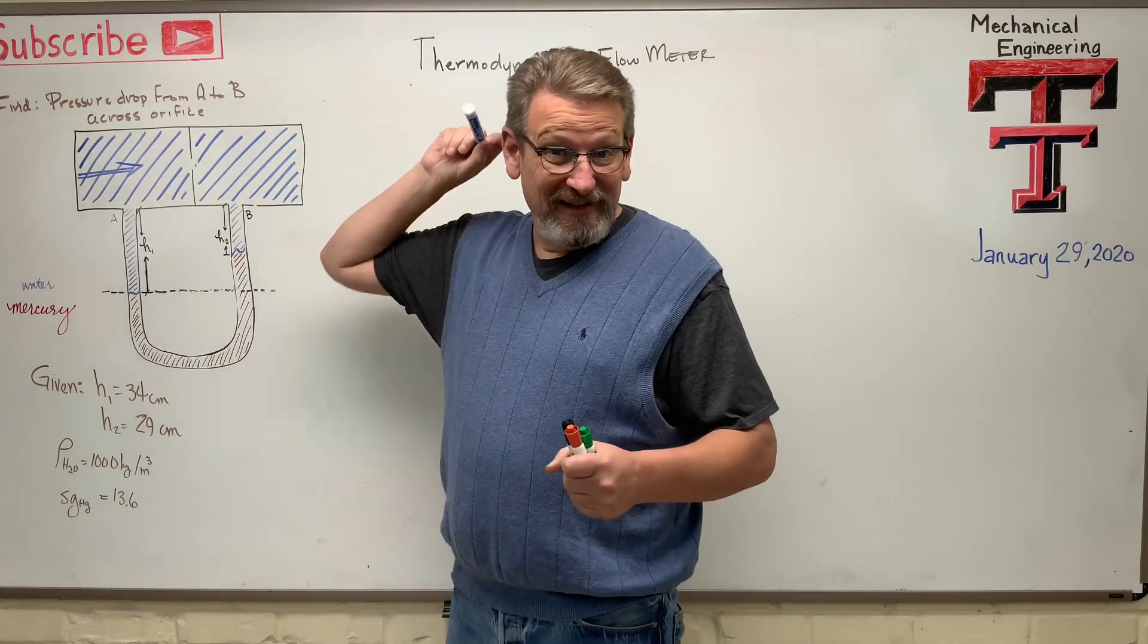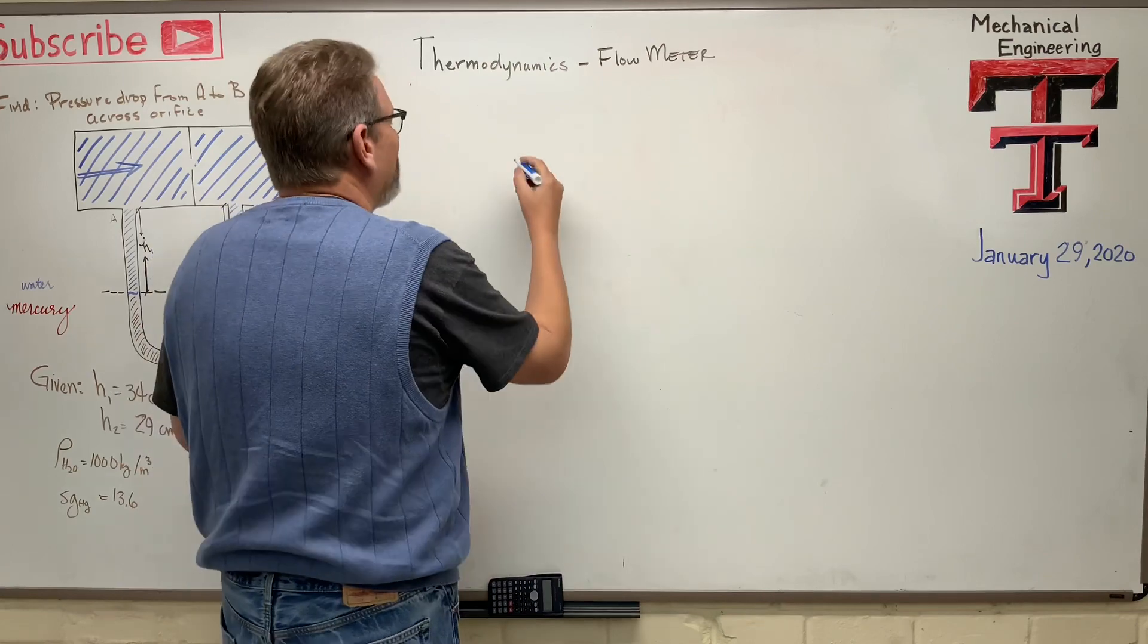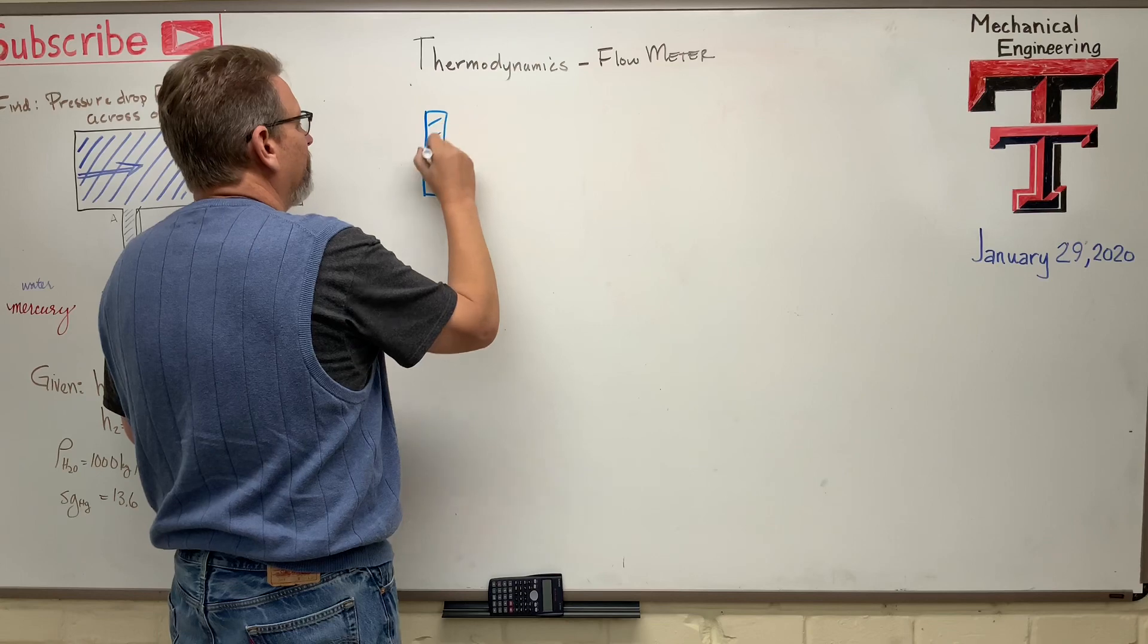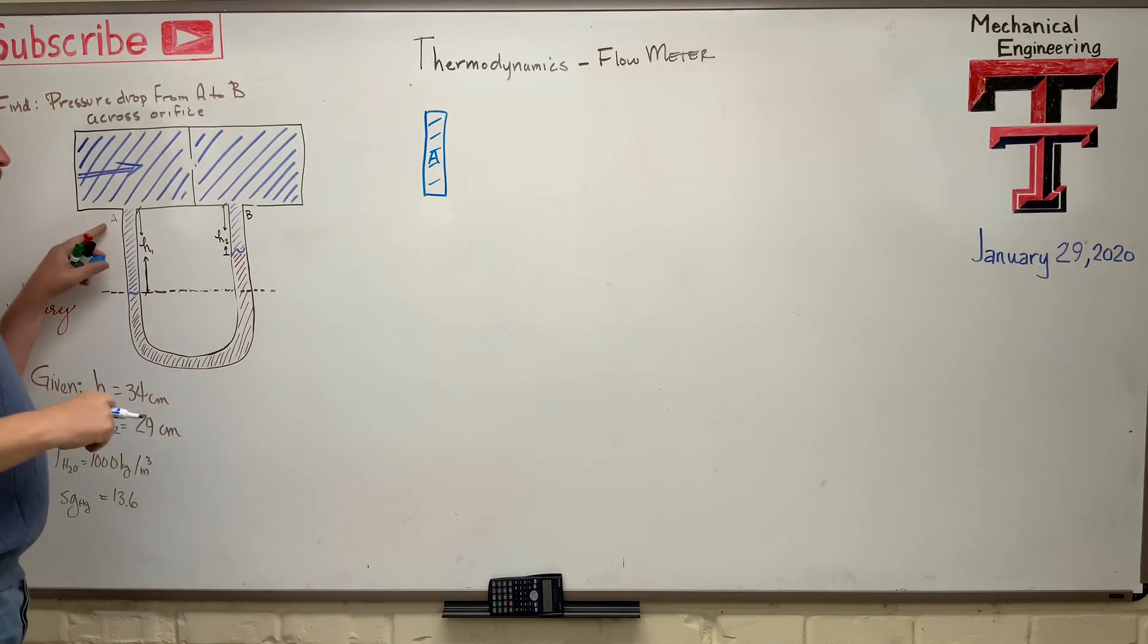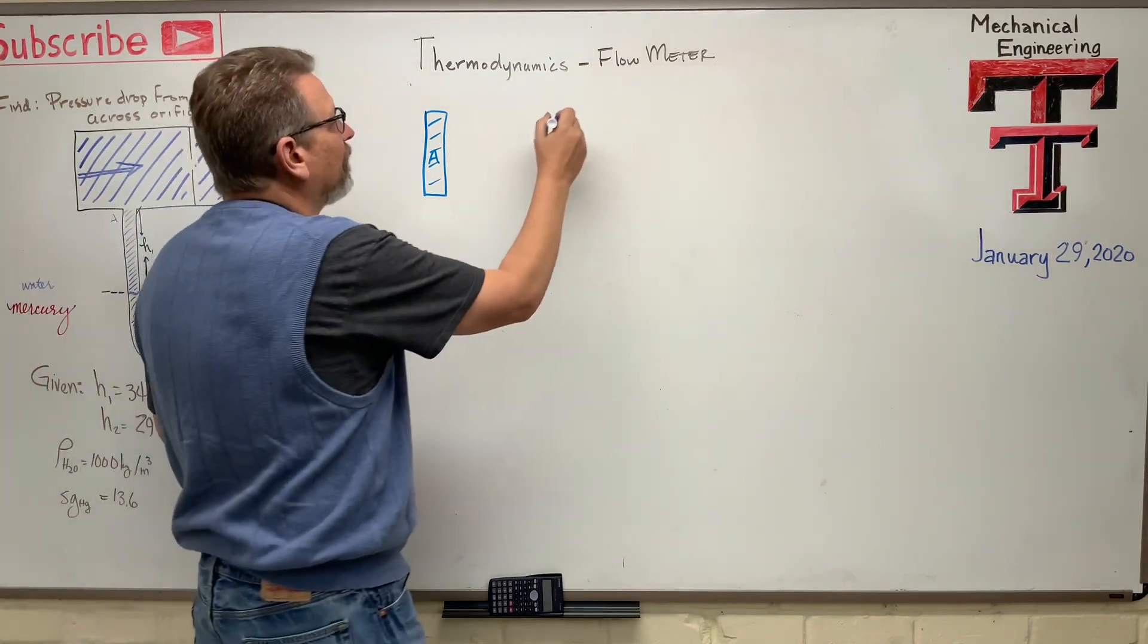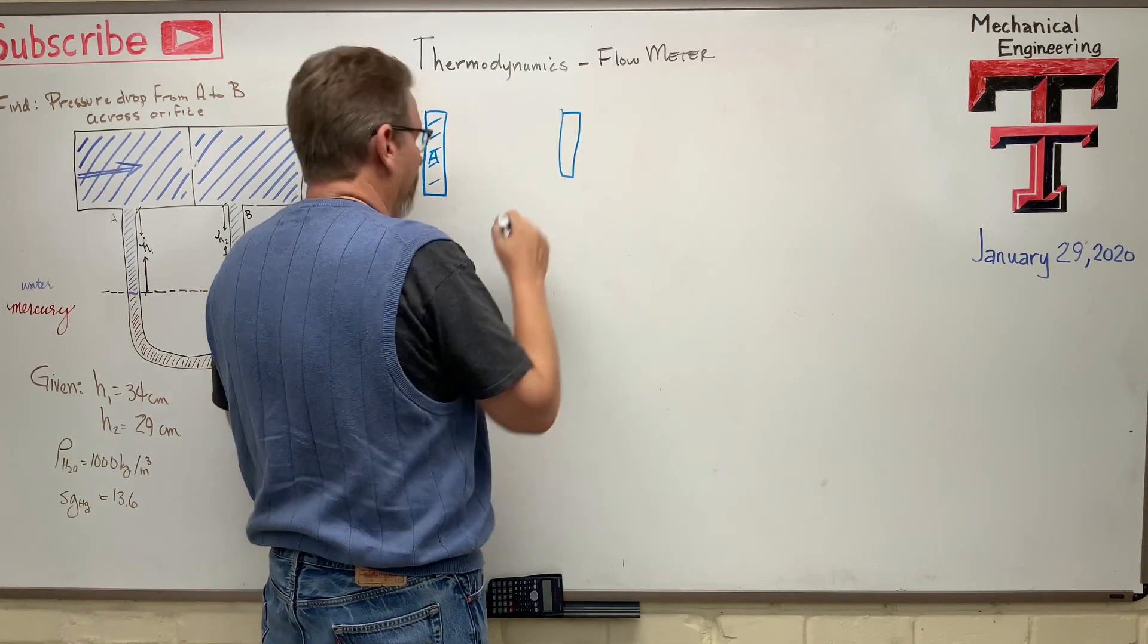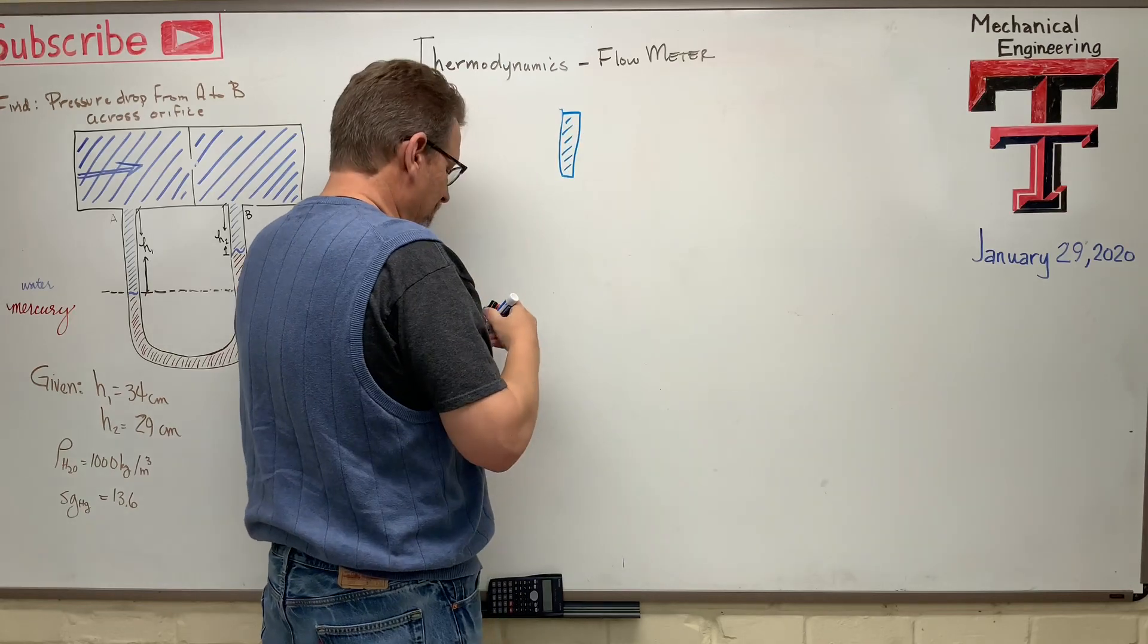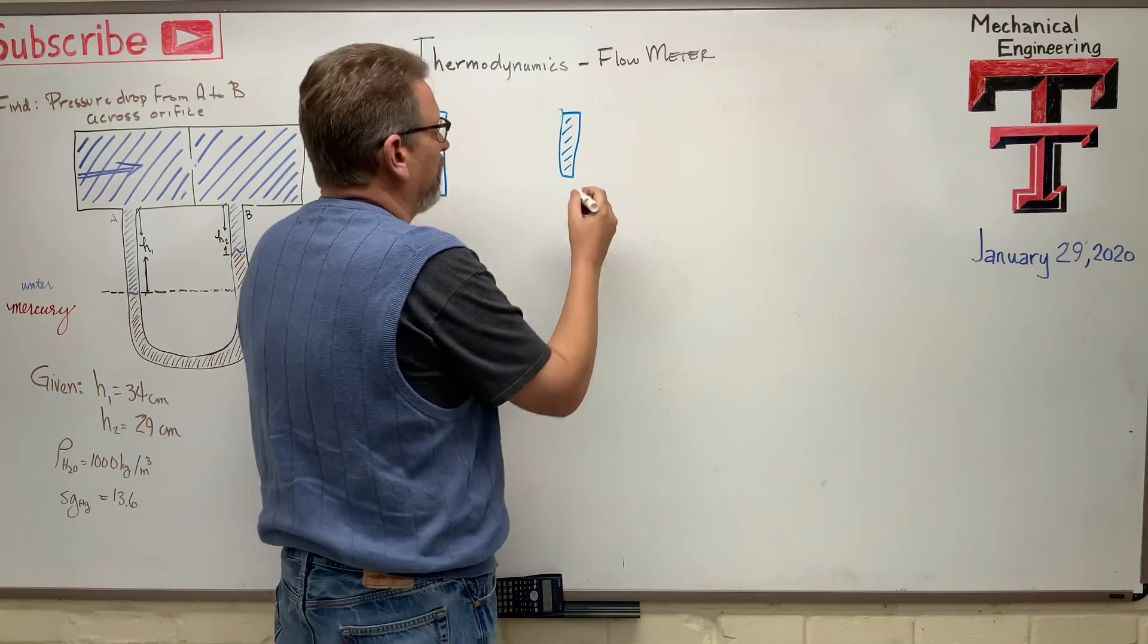So step one is, what is it? Let's draw a free body diagram. So here is side A. We'll call this side A. That's over here.